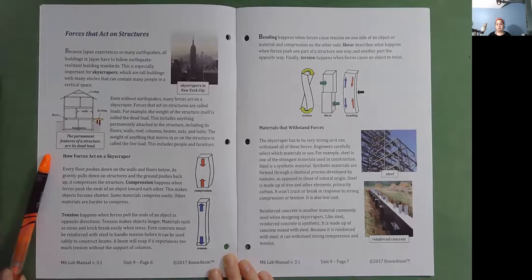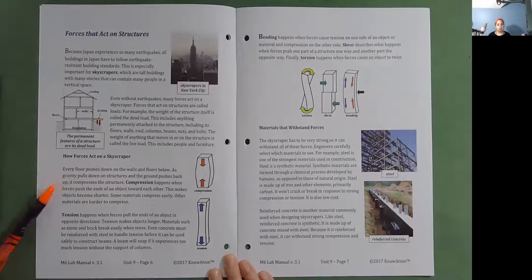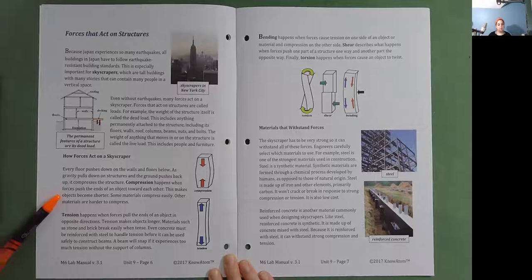How forces act on a skyscraper. Every floor pushes down on the walls and floors below. As gravity pulls down on structures and the ground pushes back up, it compresses the structure. Compression happens when forces push the ends of an object toward each other. This makes objects become shorter. Some materials compress easily. Other materials are harder to compress.